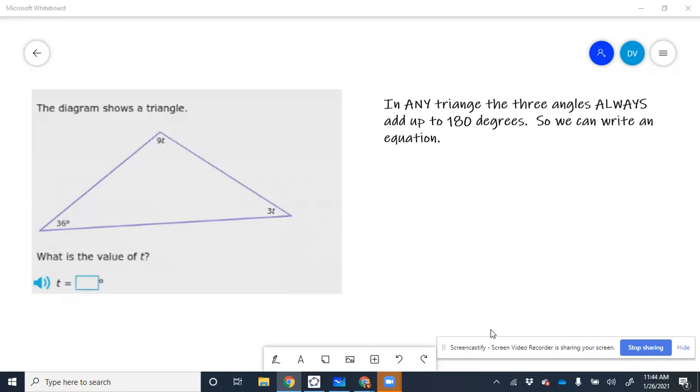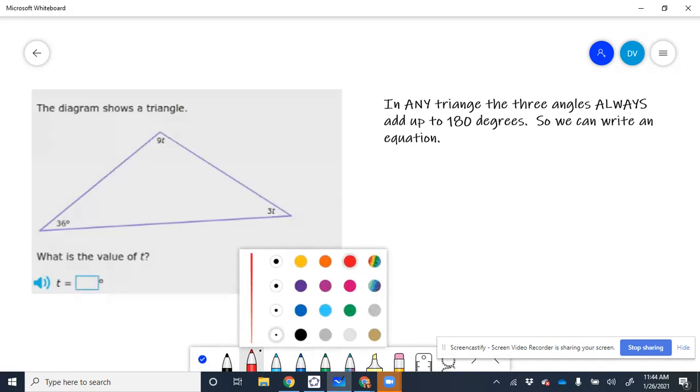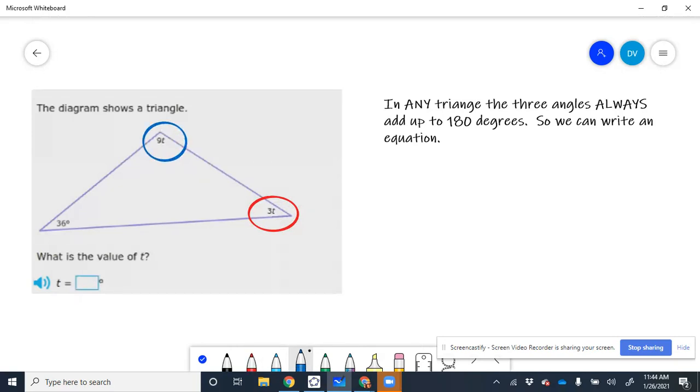So let me write what I said correctly. I'm going to write that these three, and I'm going to use different colors. I'm going to call this the red angle, the blue angle, and the green angle. Those three are going to add up, and it doesn't matter which one we write first.